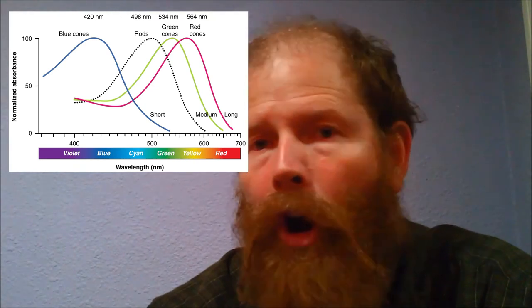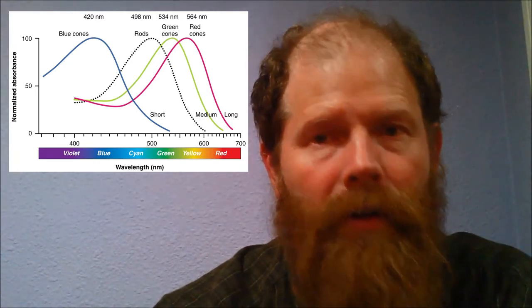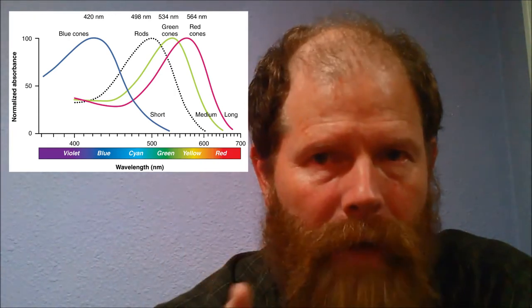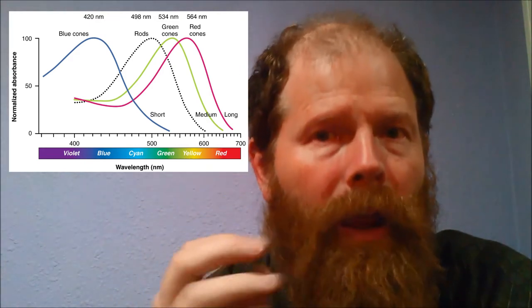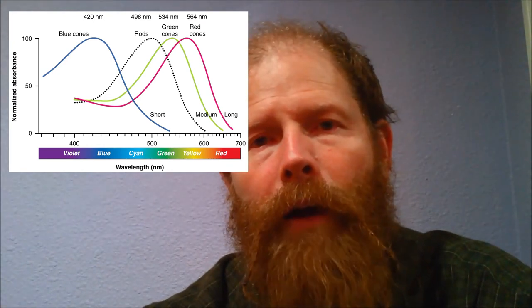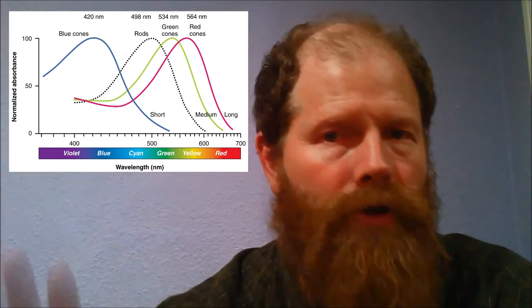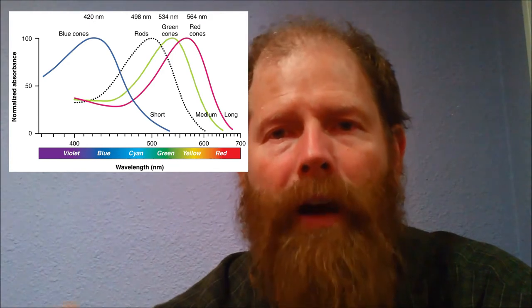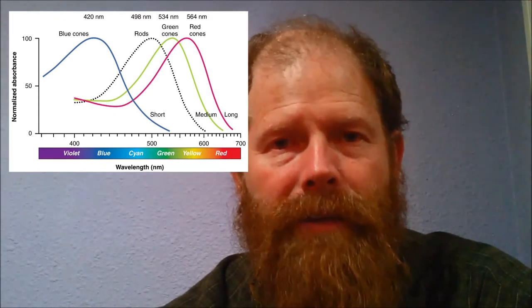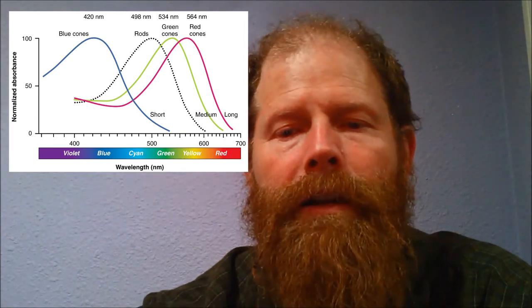Therefore, all a rod can tell is whether it was stimulated or not stimulated — in other words, should I perceive this as white or should I perceive it as black? If it gets stimulated a whole lot of times, it might be a brighter white, so you could say there's a grayscale that you see when you're using your rods, which is when there's not much light. You go into a dark room, turn off all the lights, your eyes begin to adjust, and those rods begin to become sensitive as the level of light decreases. Because there's only one kind of rod, we see in black and white when it's dark.